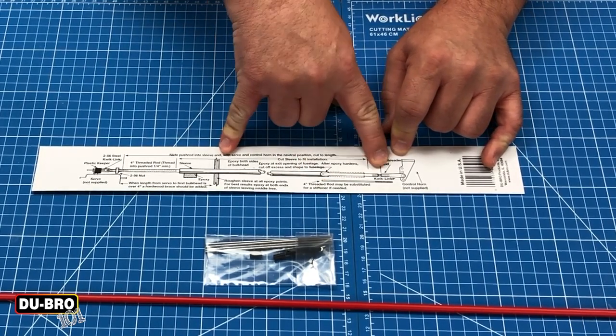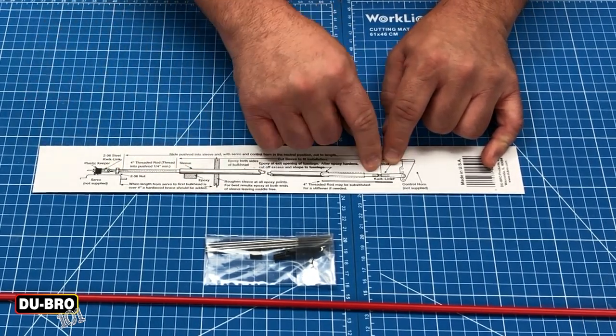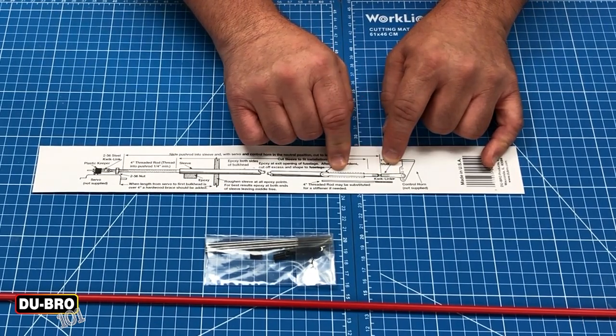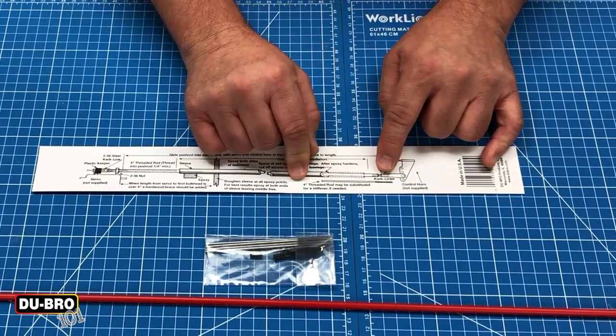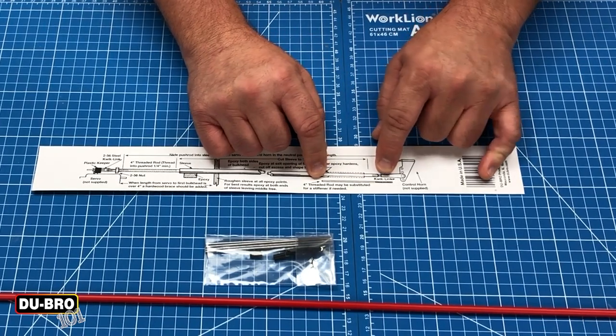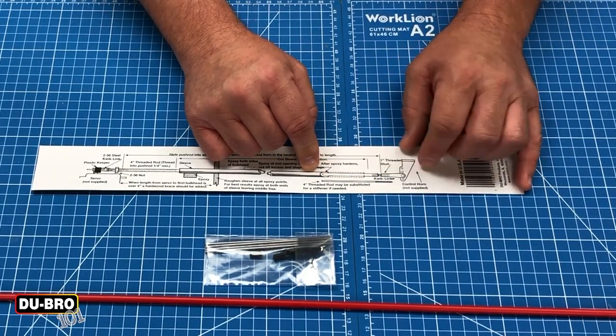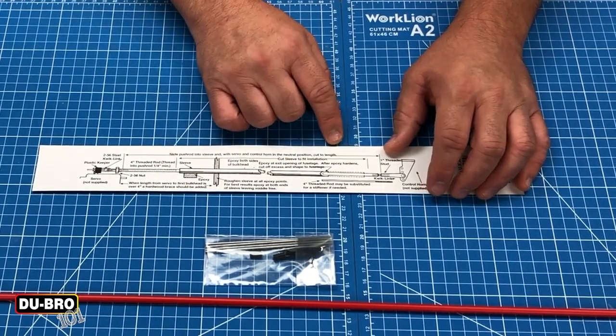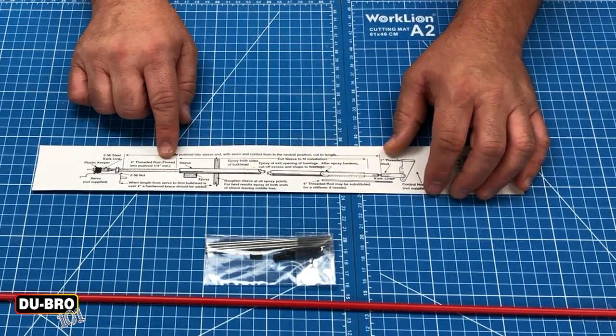Moving on to this portion, you have the same kind of thing I told you about earlier where you can use a termination of the threaded rod onto the rod itself, or you can have the four inch threaded rod extension which can be substituted for a stiffener if you need it.